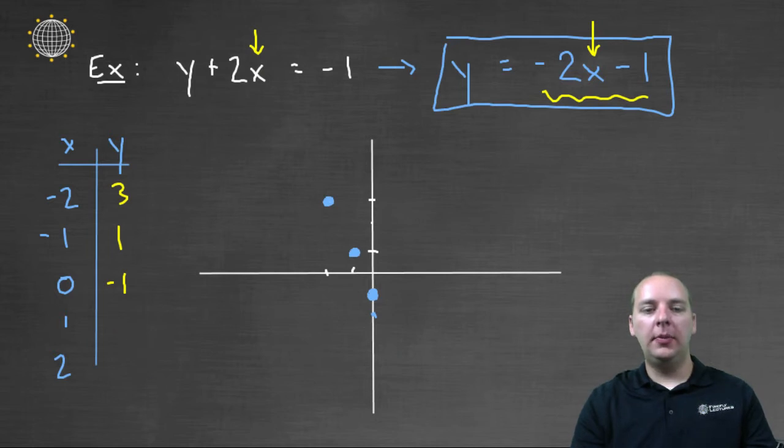Then plug in one. Negative two times one is negative two. Negative two minus one makes negative three. So we'll plot one comma negative three. And last point, plug in an x value of two. Negative two times two makes negative four. Minus one makes negative five. So two comma negative five is down here.